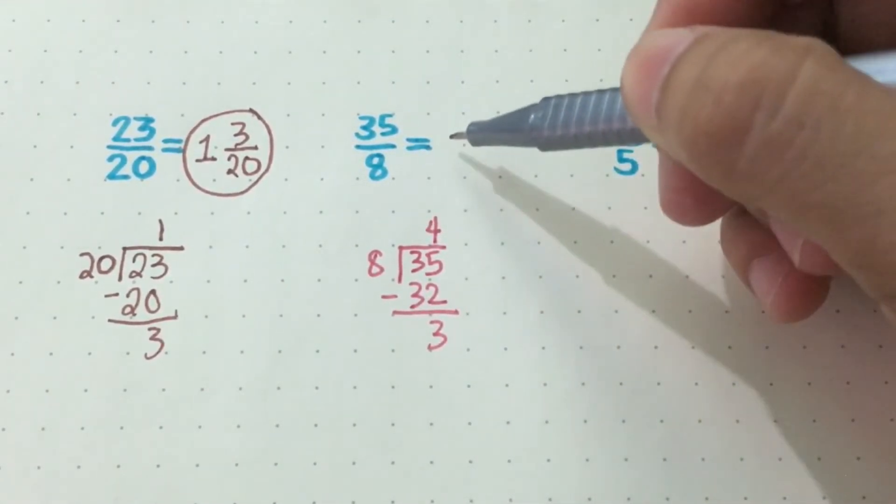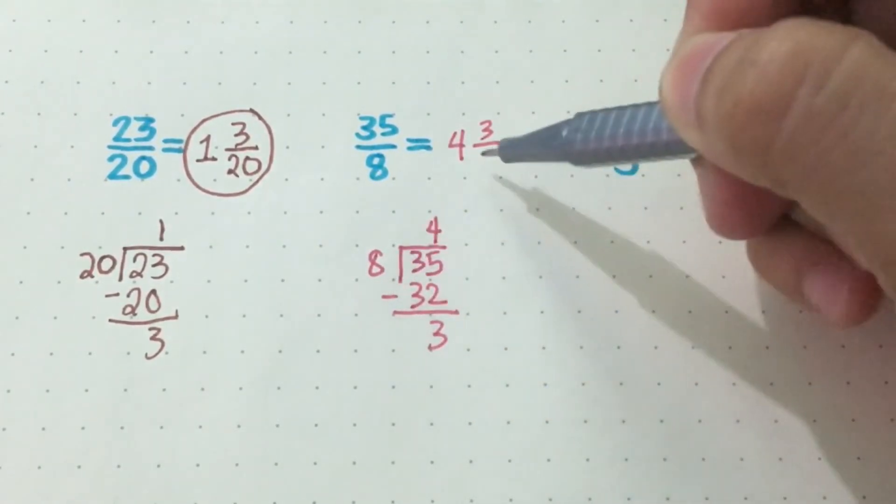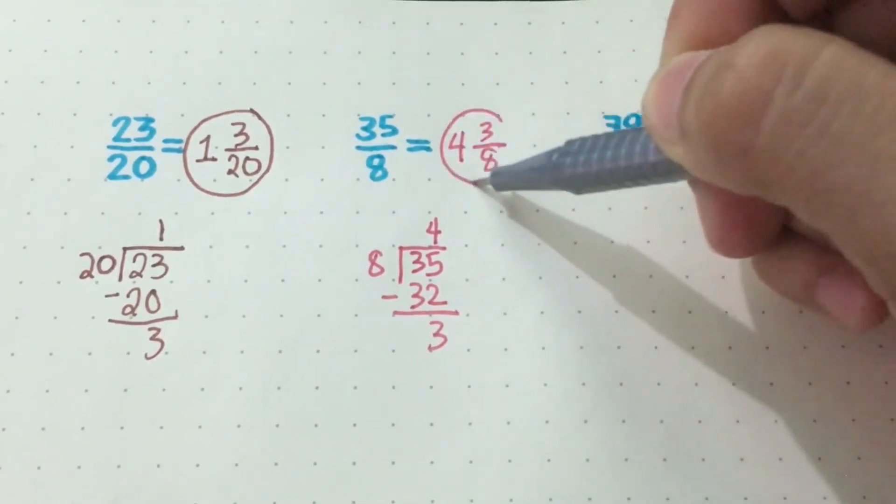The whole number is the answer, which is 4. The remainder is your numerator, which is 3, and the denominator is 8. So we have 4 and 3 eighths.